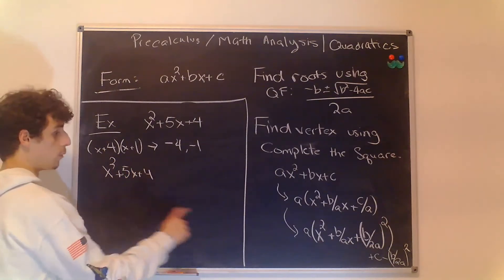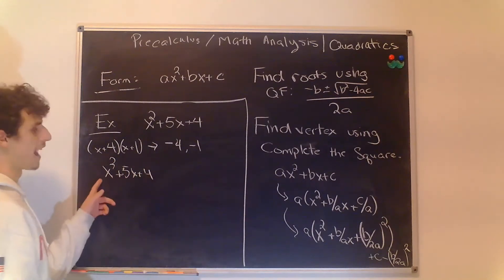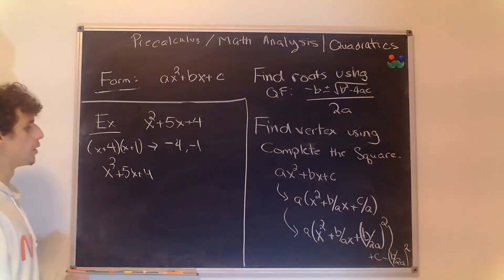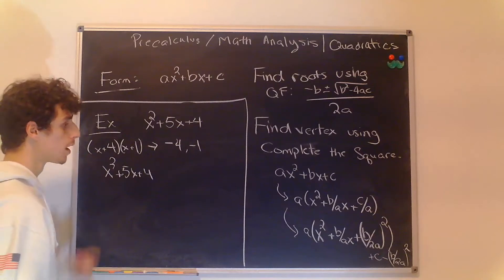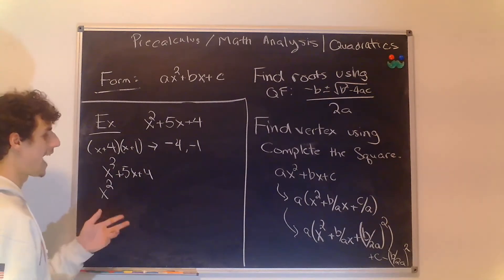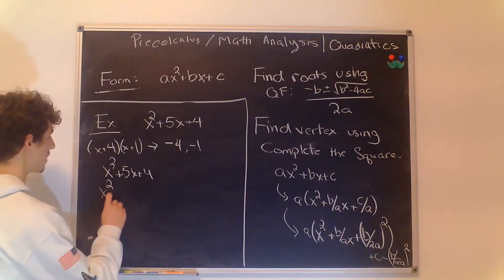And we want to first factor out our leading coefficient but our leading coefficient here is 1 so we don't really have anything to do there. Next we want to divide this number 5 by 2 and add its square to the right.